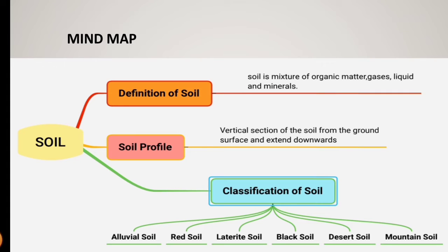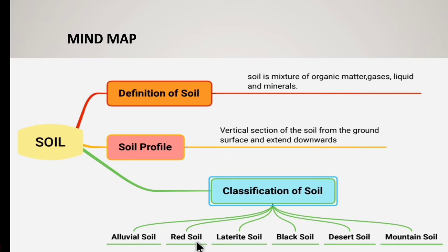Let's review the mind map for today's topic — soil. First, the definition: soil is a mixture of organic matter, gases, liquid, and minerals. Then soil profile: a vertical section of the soil from the ground extending downwards. Classification of soil has 6 major categories: alluvial soil is the most productive, suitable for agriculture, found near coastal areas; red soil is red due to iron oxide; laterite soil suits tea and coffee; black soil suits cotton cultivation; desert soil is not cultivable; and mountain soil is found on mountain slopes.